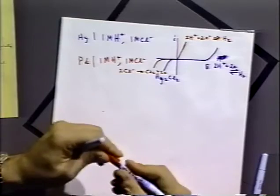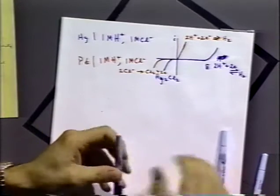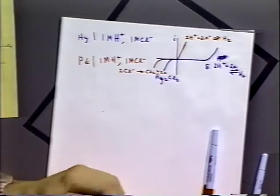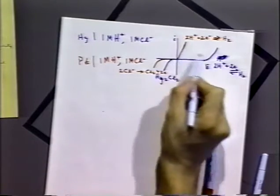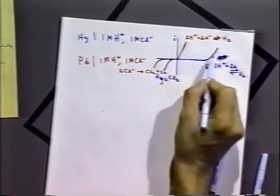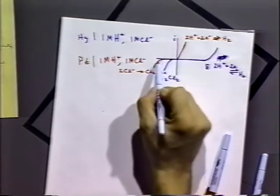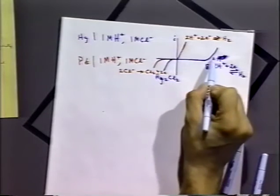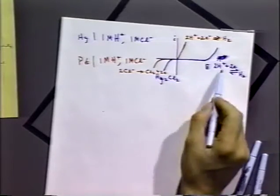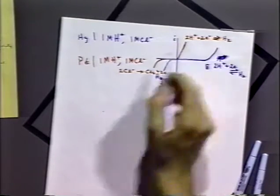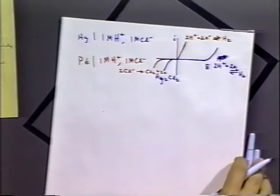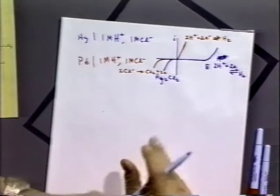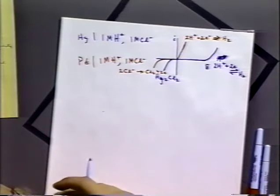This shows that with different electrodes, we can have different types of chemical reactions occurring. The difference between these two is basically a kinetic difference — the proton reduction reaction occurs very slowly on the mercury electrode, but quite rapidly on the platinum electrode. In fact, there's about a nine-order-of-magnitude difference in the reaction rate between those two systems.